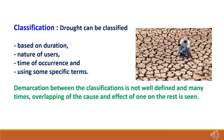Classification of drought. Drought can be classified based on different parameters: first, based on duration; second, based on nature of users; third, based on time of occurrence; and fourth, based on using some specific terms. The demarcation between the classifications is not well defined, and many times overlapping of the cause and effect of one type is seen.